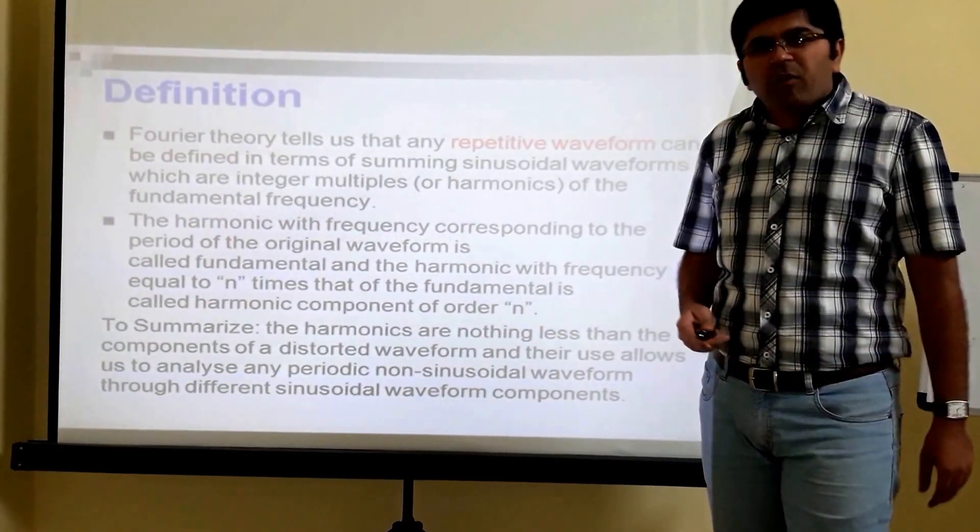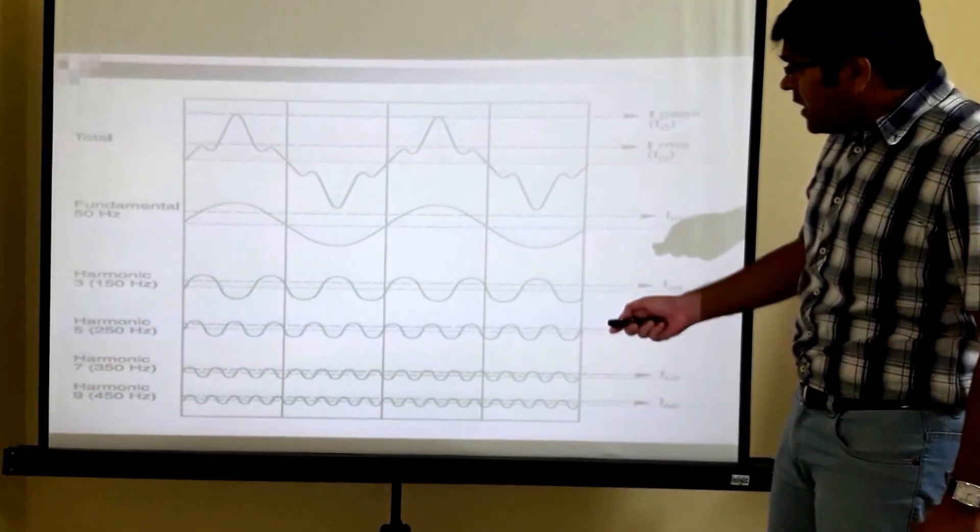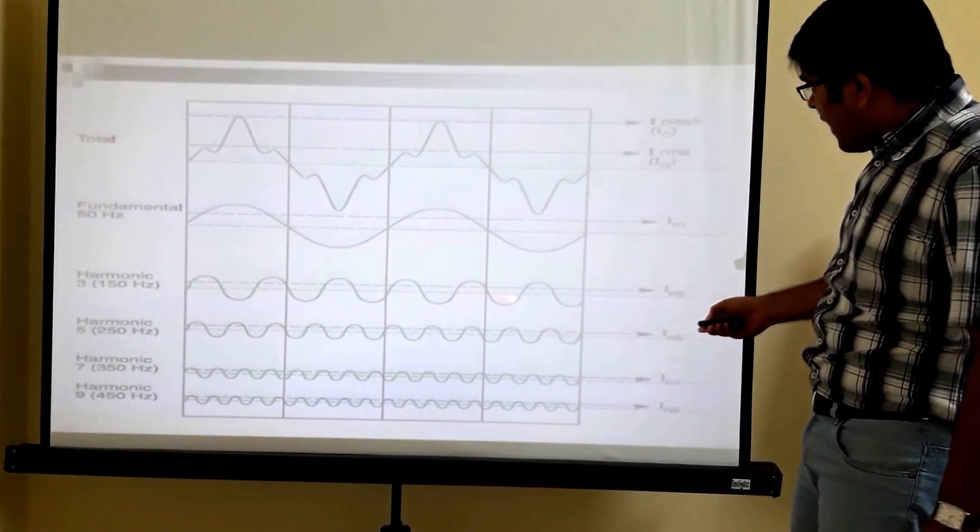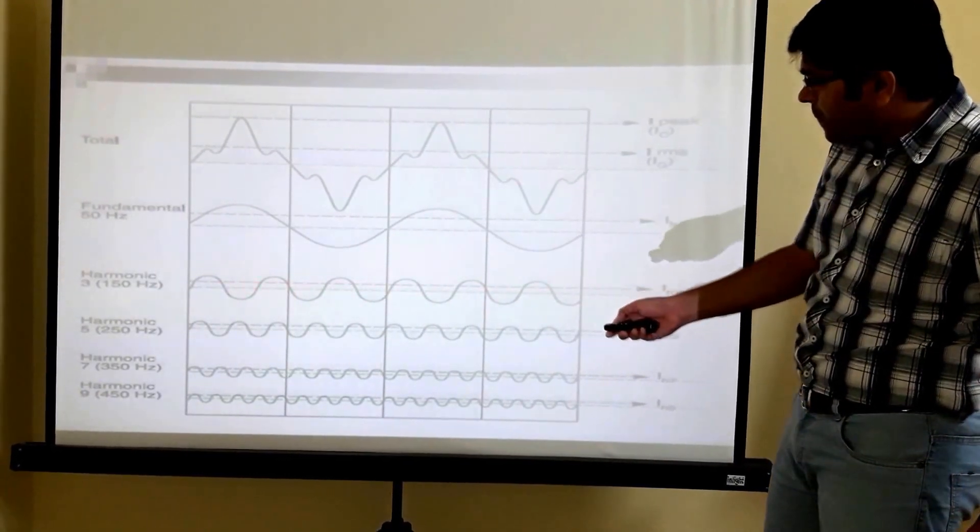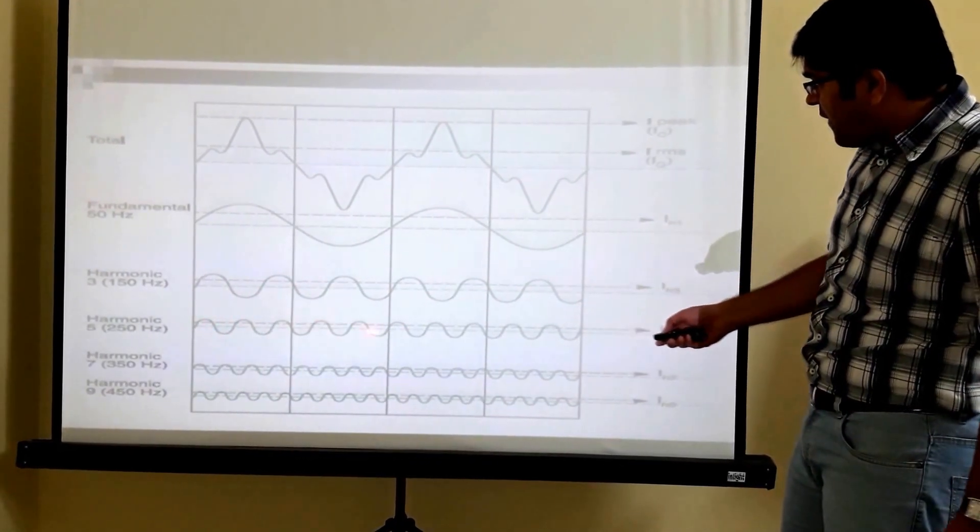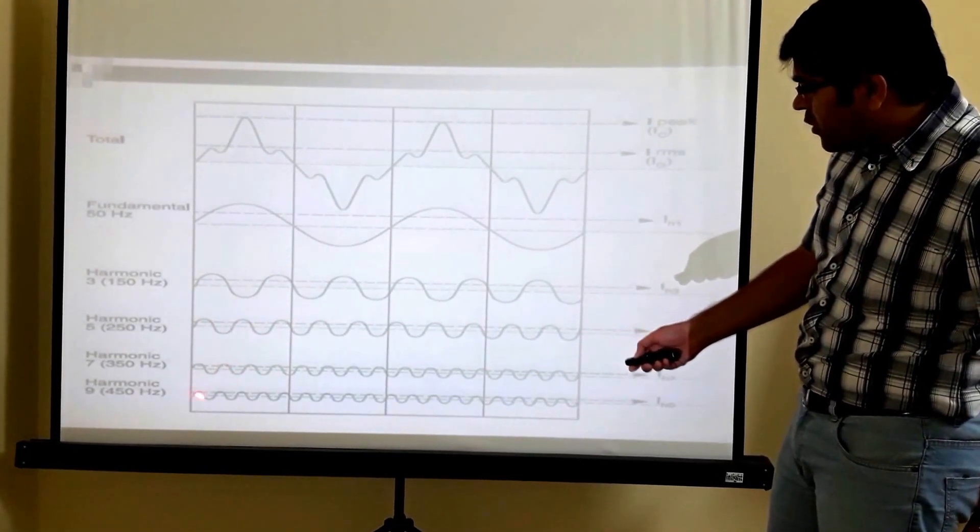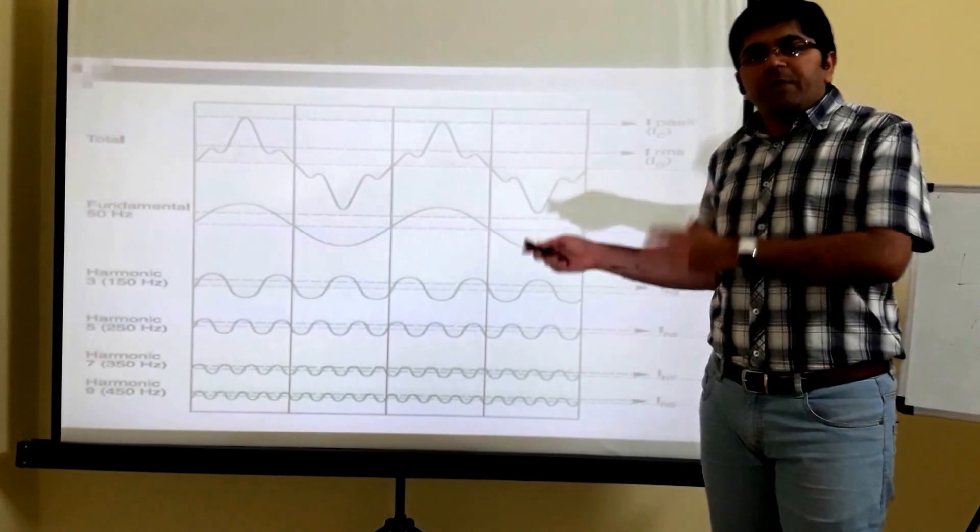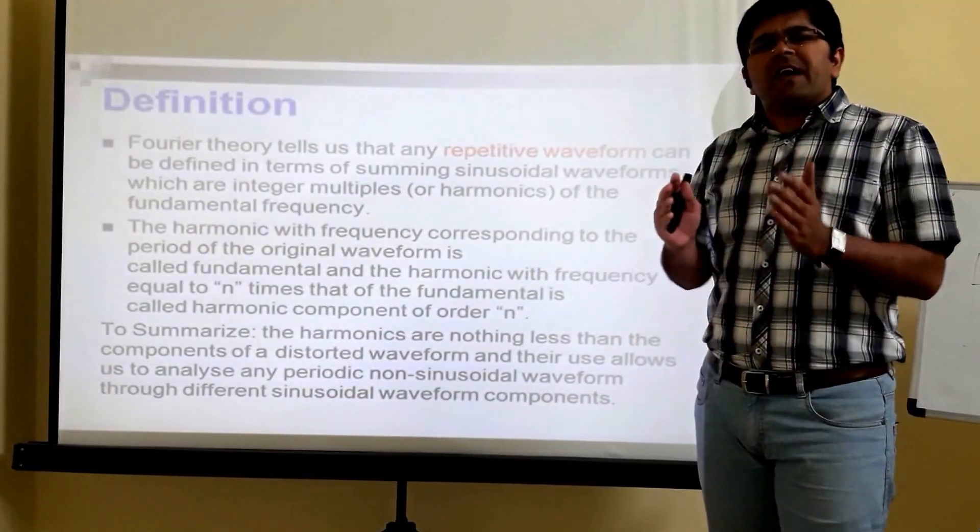He says repetitive waveform. Now what is this repetitive waveform? Let's check out. As you can see here, these waveforms of harmonic order 3, this is the repetitive waveform of harmonic order 5, order 7, order 9. So that's what it means to say that these waveforms get repeated. Now he says that integer.